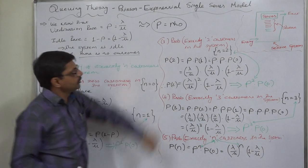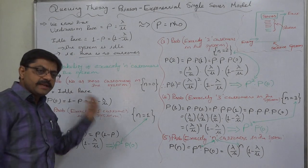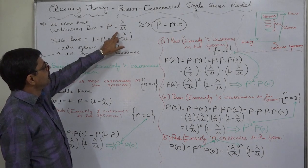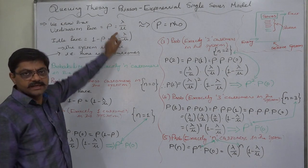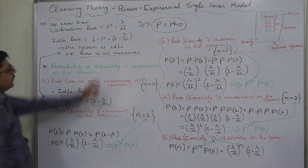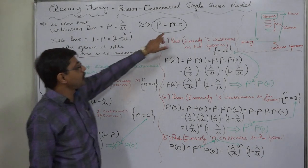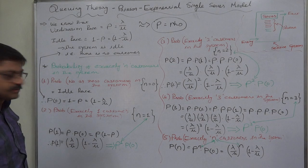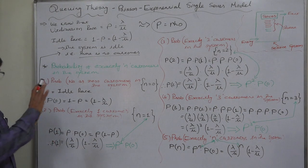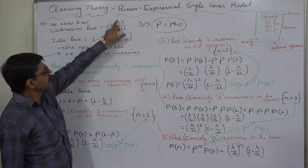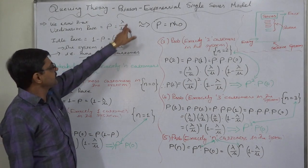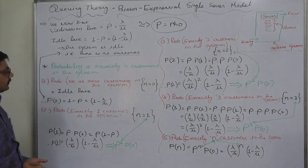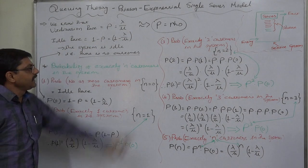This is called the Poisson exponential single server model. Based on the previous lectures, we already know the concepts of lambda, that is the average arrival rate per time interval, and mu, that is the average service rate per time interval. Rho is the utilization rate, which is lambda divided by mu, or average arrival rate divided by average service rate, showing capacity utilization. The idle rate is 1 minus rho, or 1 minus lambda by mu.